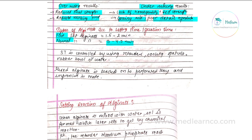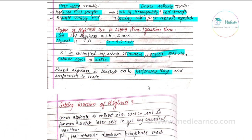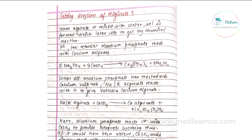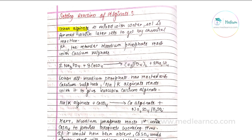Setting time is controlled by using retarders, and by cooling the spatula, rubber bowl, or water. The mixed alginate is loaded onto a perforated tray with a rimlock system. During the setting reaction, when alginate is mixed with water, a sol is first formed, which later sets to a gel.